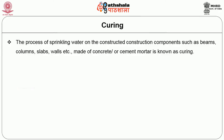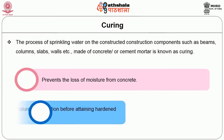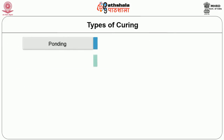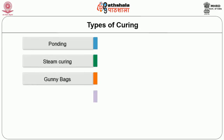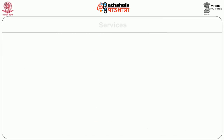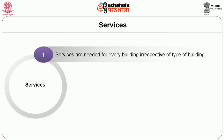The process of sprinkling water on constructed components such as beams, columns, slabs, walls etc. made of concrete or cement mortar is known as curing. It serves two purposes: first, it prevents the loss of moisture from concrete; second, it maintains a favorable temperature during hydration before the concrete attains its hardened stage. Types of curing include ponding, steam curing, gunny bags, sprinkling of water, and membrane curing. Normally ponding is followed at roof curing, gunny bags at columns and beams, and sprinkling of water on plastered walls.